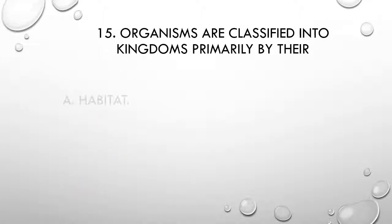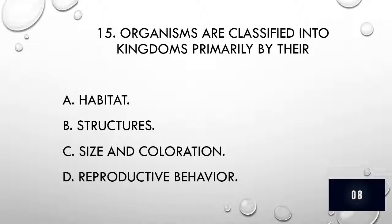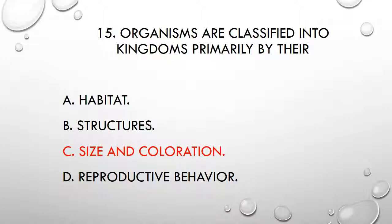Question 15. Organisms are classified into kingdoms primarily by their: A) habitat, B) structures, C) size and coloration, D) reproductive behavior. The correct answer is C, size and coloration.